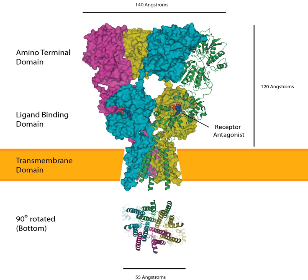The T-840 site was more recently discovered and has been implicated in LTD. Finally, S-845 is phosphorylated by PKA, which regulates its open probability.